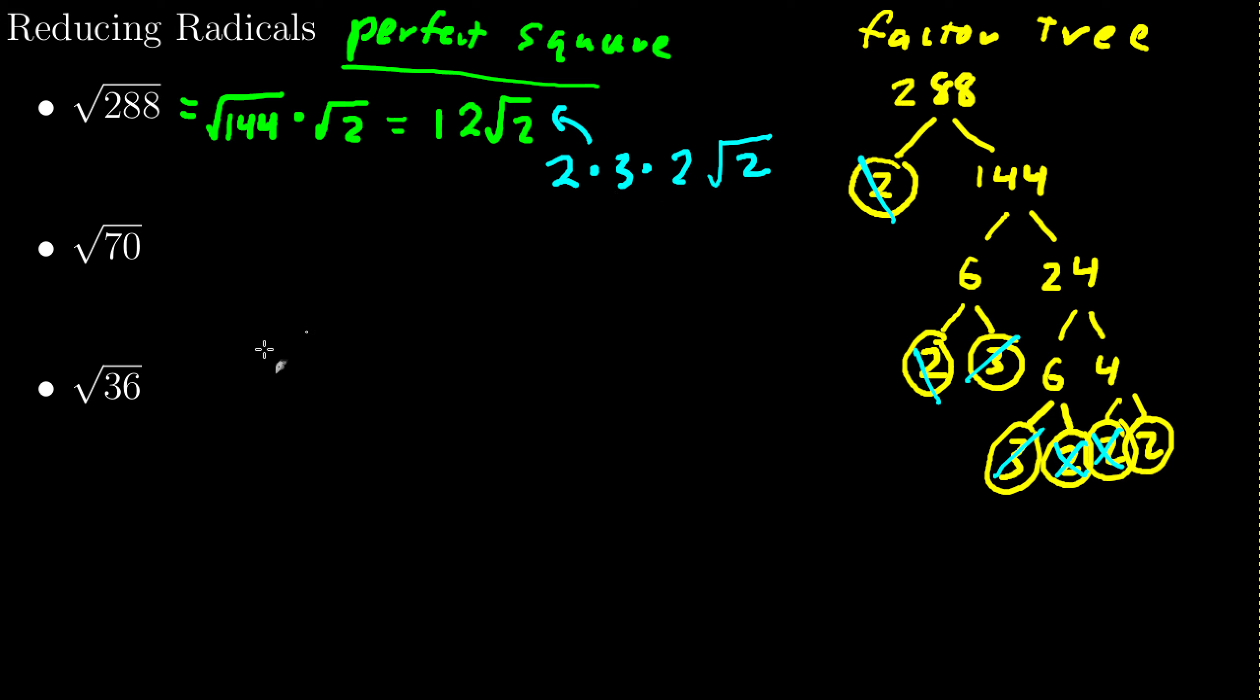Now, I'm going to show the factor tree method for these two, just to show you what can happen if things go a little bit wonky. So what about root 70? Well, we'll start the same way. 70. What goes into 70? Well, I know 10 does. So 10 times 7. 7 is prime, so I'll circle it. But 10 breaks down as 2 and 5. They are both prime. Now notice, I do not have any pairs. So what that means is nothing comes out of the square root. So I will have a 2, a 5, and a 7 all multiplied inside there, which is just root 70, which means, in this case, root 70 is already fully reduced.